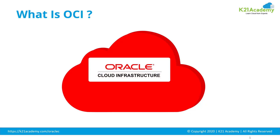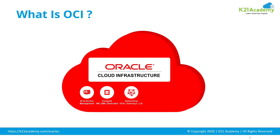Oracle Cloud Infrastructure consists of five core services that includes Identity Access Management, Compute — with different types: virtual machine, bare metal, and dedicated — Networking, Storage, and Database Systems.